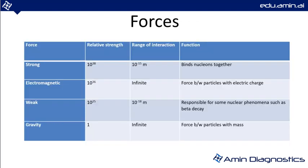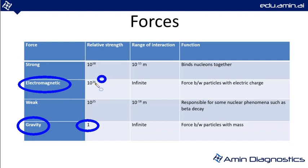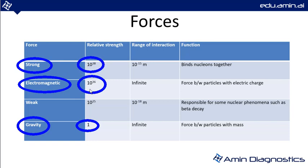There is also a fundamental force involving the interaction between protons and neutrons. Looking at a table of forces: gravity has a relative strength of one. The electromagnetic force has a relative strength of 10³⁶ compared to gravity, an infinite range of interaction, and acts between electrically charged particles — it can be attractive or repulsive.